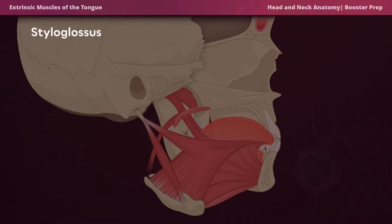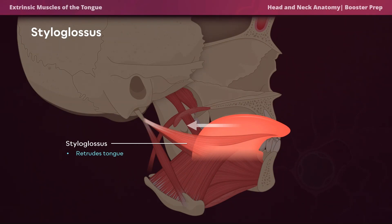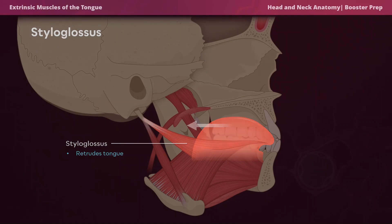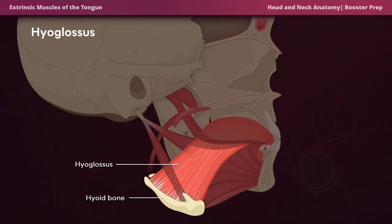The next muscle is the styloglossus. The 'stylo' in styloglossus refers to the styloid process, which is where the muscle originates. Because the styloglossus originates at the styloid process towards the back of the mouth and attaches to the apex of the tongue, it contracts to retrude or pull the tongue towards the back of the mouth.